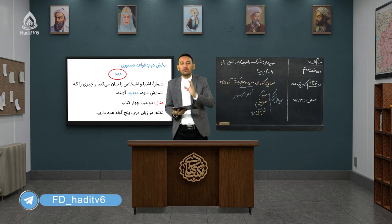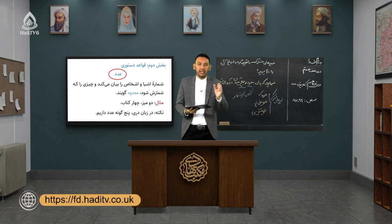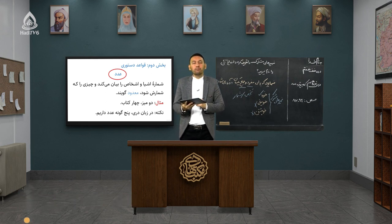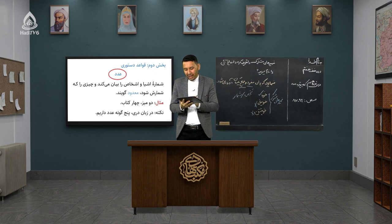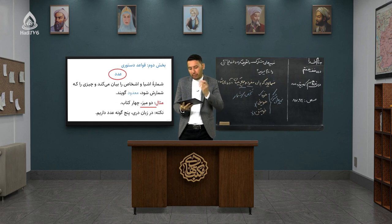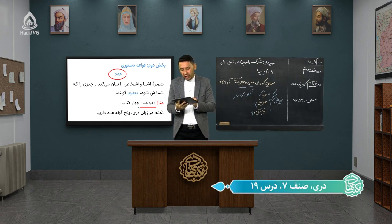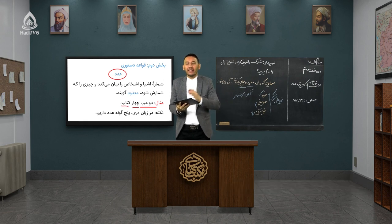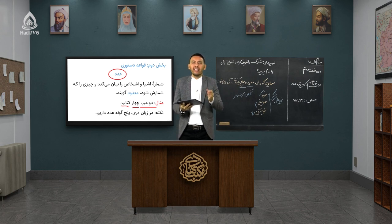ما دو چیز داریم: یک عدد داریم، یک معدود داریم. عدد و معدود لازم و ملزوم همدیگر هستند و همواره در کنار همدیگر بیان میشوند. به طور مثال: «دو میز» - «دو» میشود عدد ما، «میز» میشود معدود ما. معدود آن چیزی است که عدد آن را بیان میکند. «چهار کتاب» - «چهار» میشود عدد، «کتاب» میشود معدودش. چهار بیان‌کننده تعداد کتاب‌های ماست.